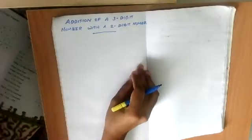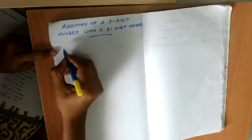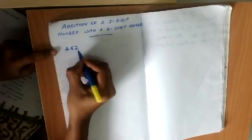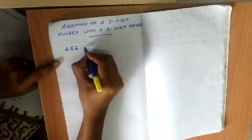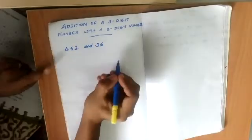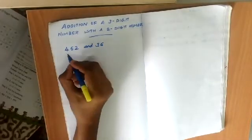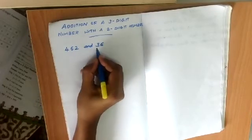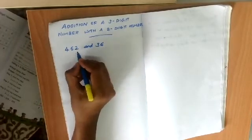Hello children. In this video we can see how to add a three-digit number with a two-digit number. First we can take a three-digit number, for example 462, and a two-digit number, that is 36.